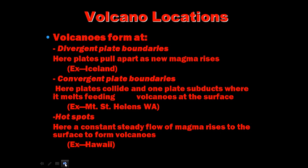Volcano locations: volcanoes form at plate boundaries, mostly divergent and convergent. At divergent plate boundaries, plates pull apart and magma rises — an example is Iceland. At convergent plate boundaries, plates collide and one plate subducts, melting and feeding volcanoes at the surface — an example is Mount St. Helens.